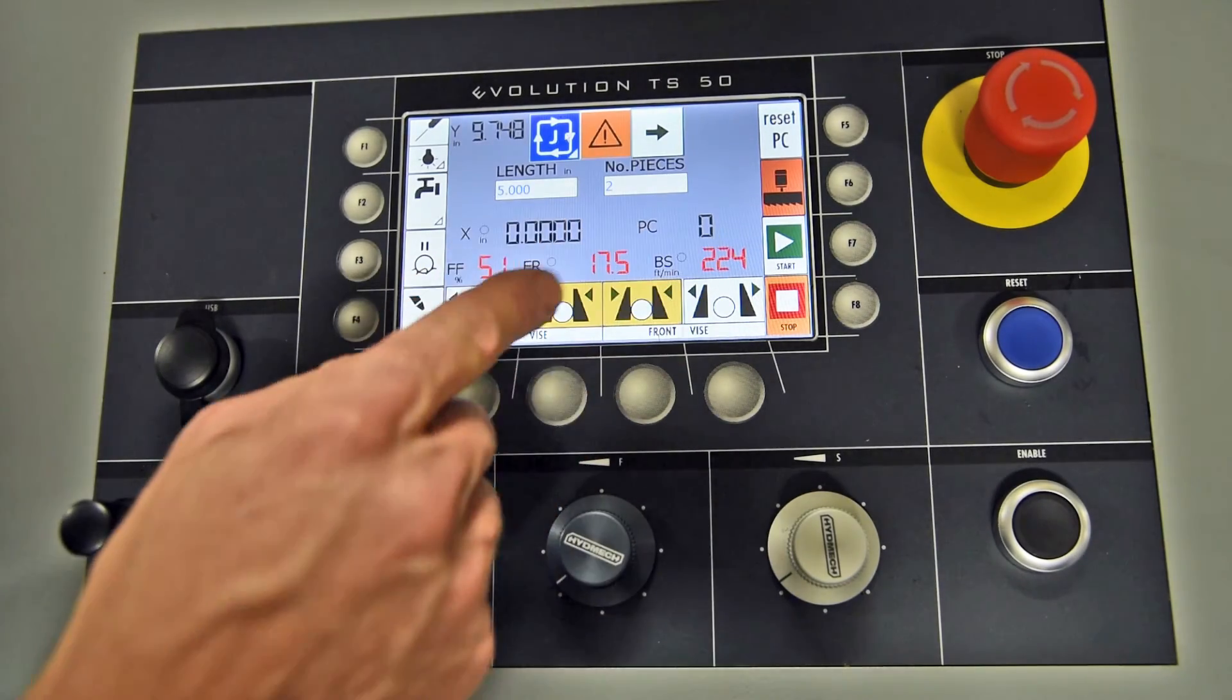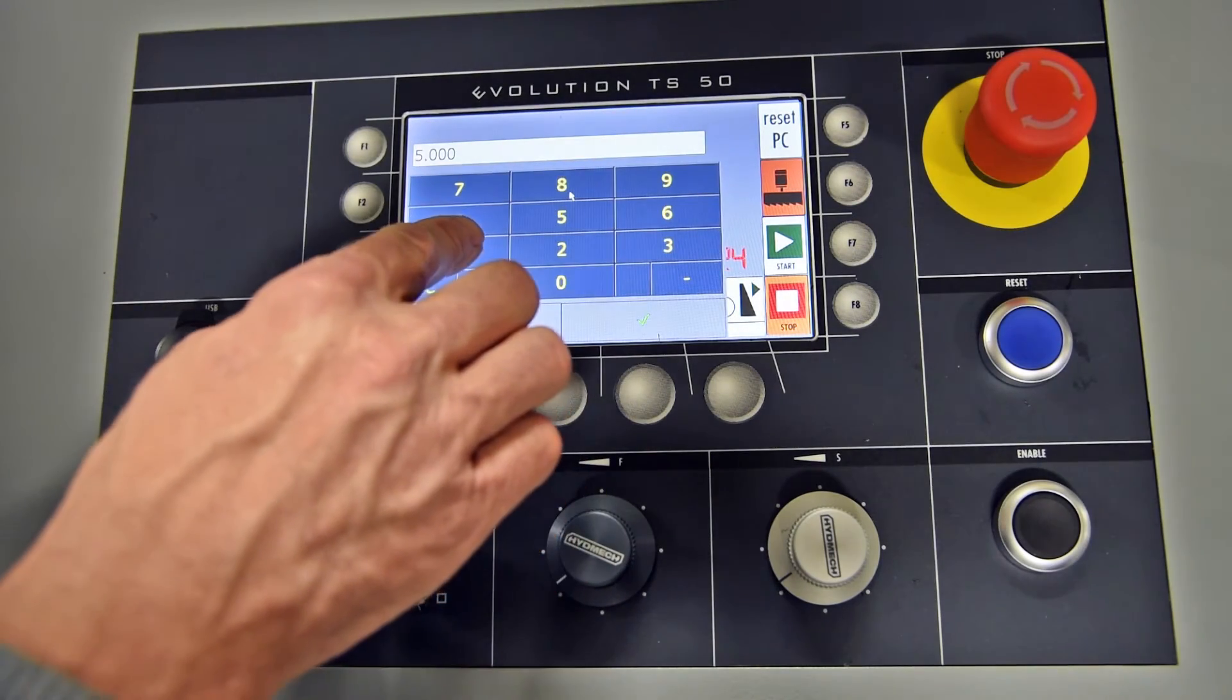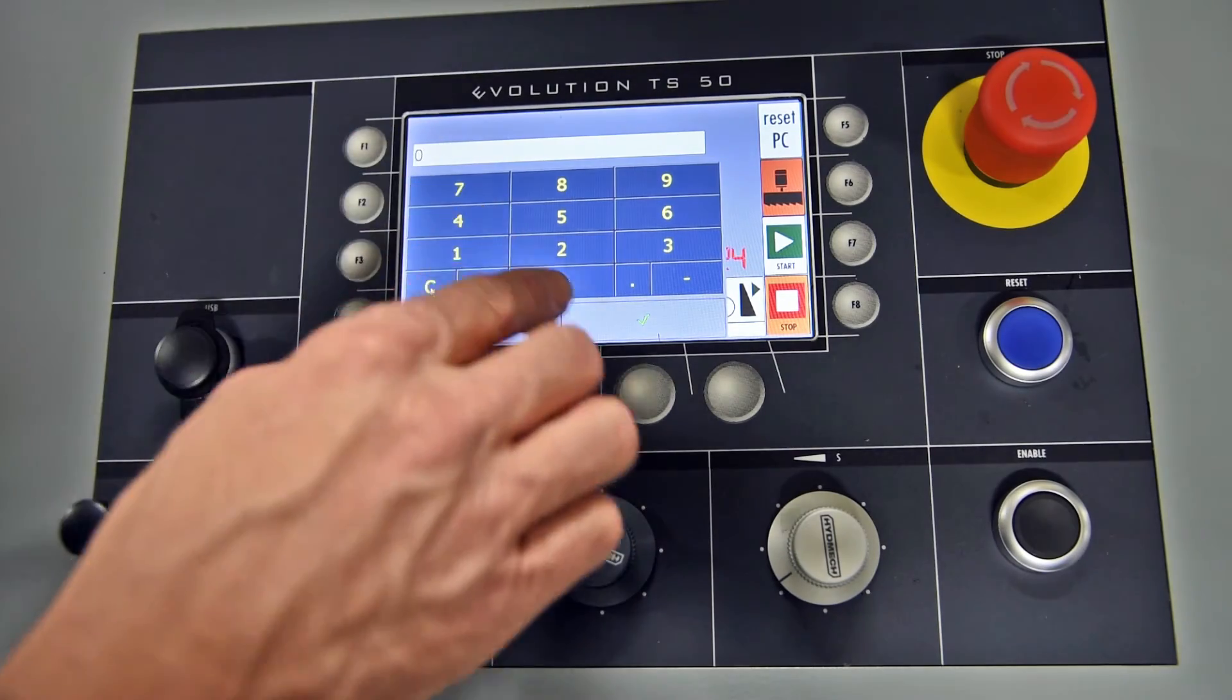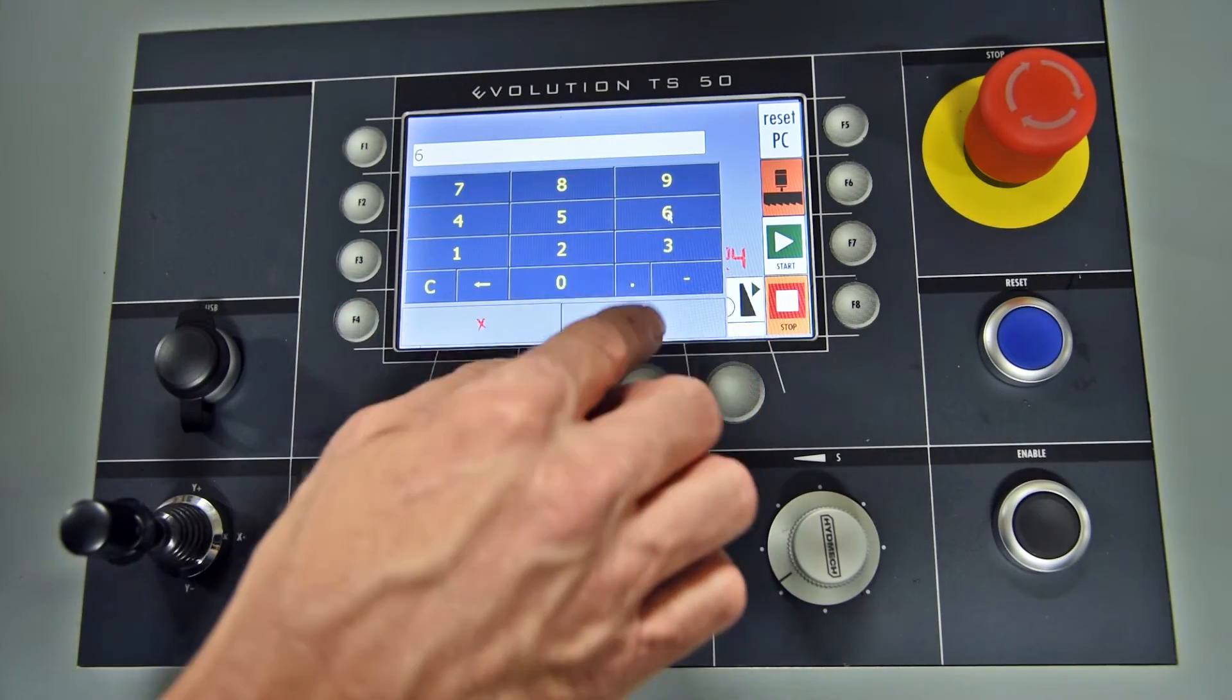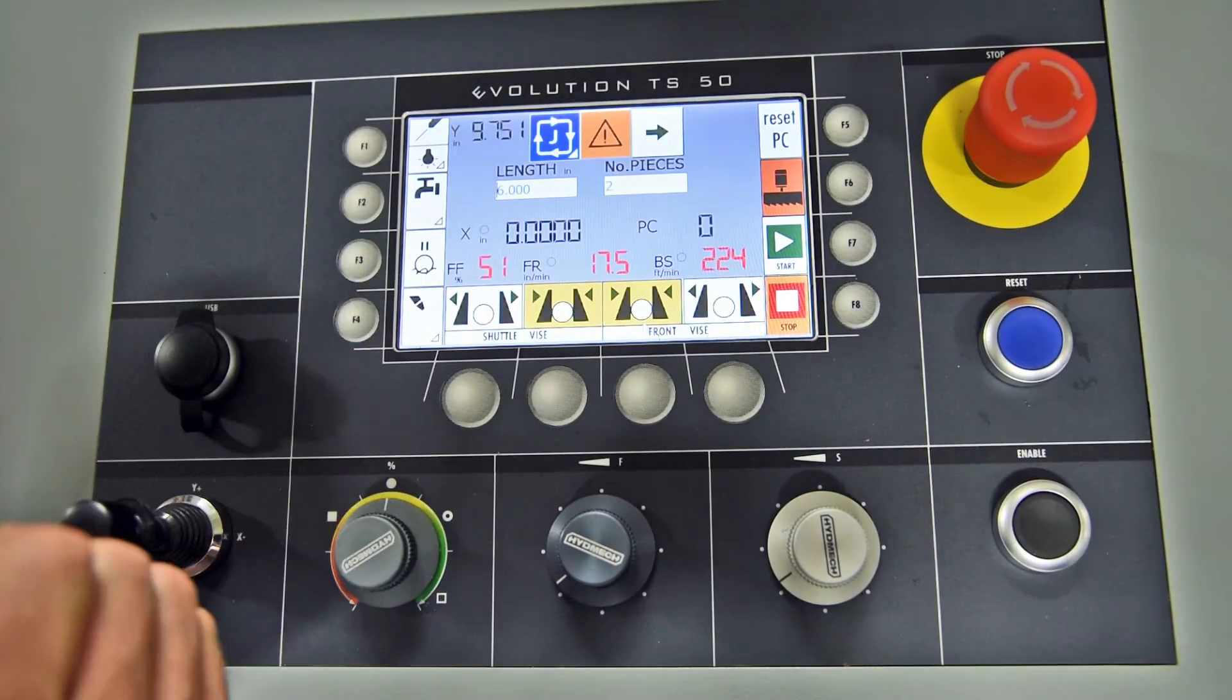At this point, I need a new length. So I would just touch the length display and re-enter my value. Now you can clear it or if there's a value there, you can just override it. So we're going to go with six point zero, enter, length of six inches.